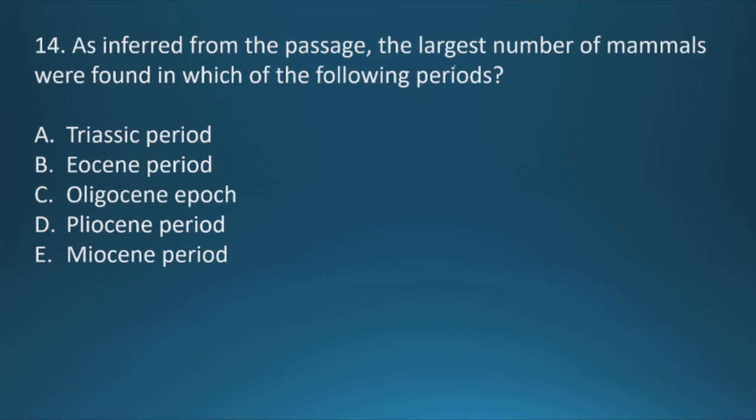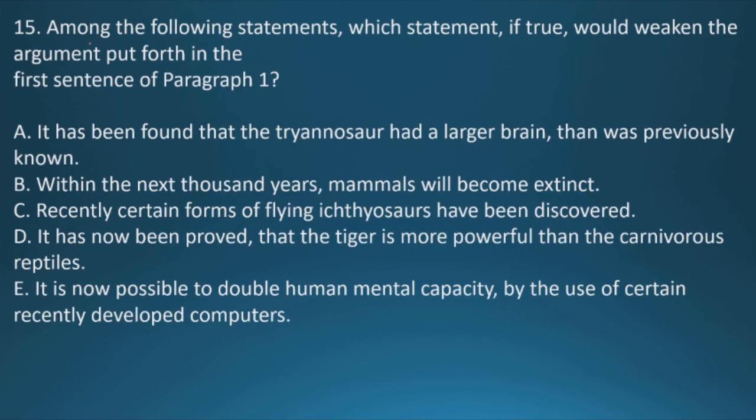Question fourteen: As inferred from the passage, the largest number of mammals were found in which of the following periods? The answer for this is option E, Miocene period. Question fifteen: Among the following statements, which statement if true would weaken the argument put forth in the first sentence of the paragraph? The correct answer is option A: It has been found that the triceratops had a larger brain than was previously known.